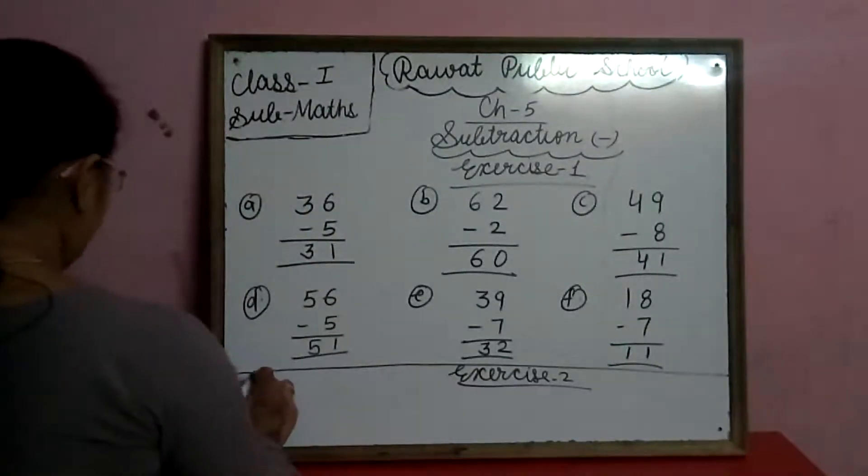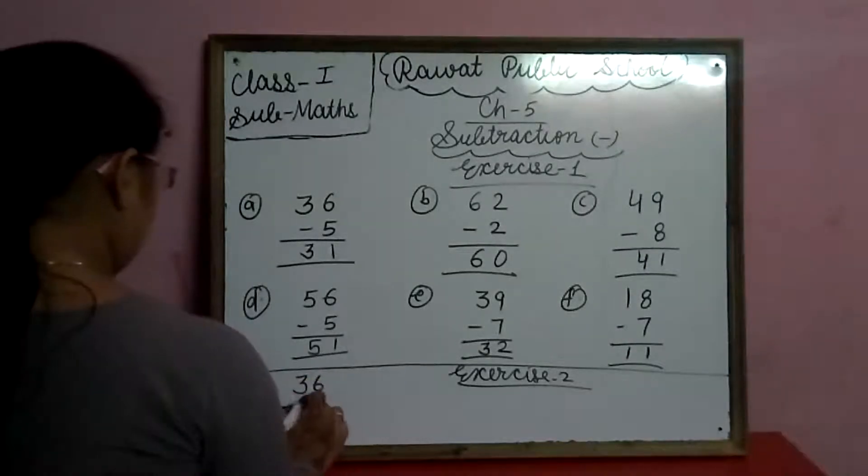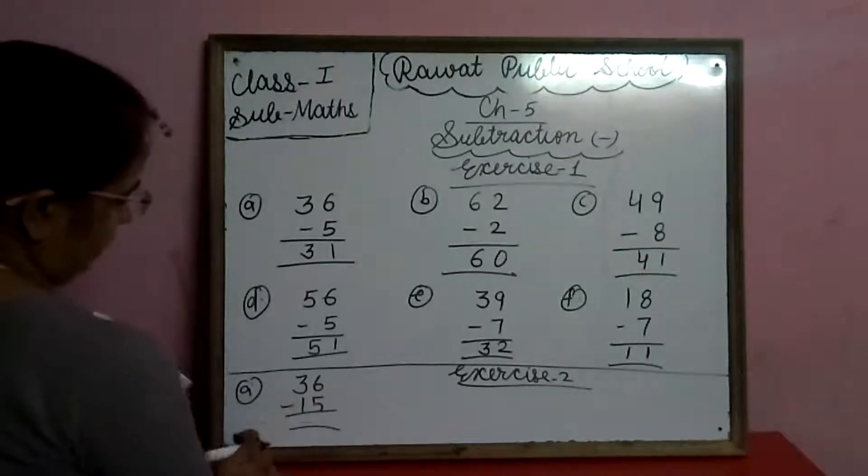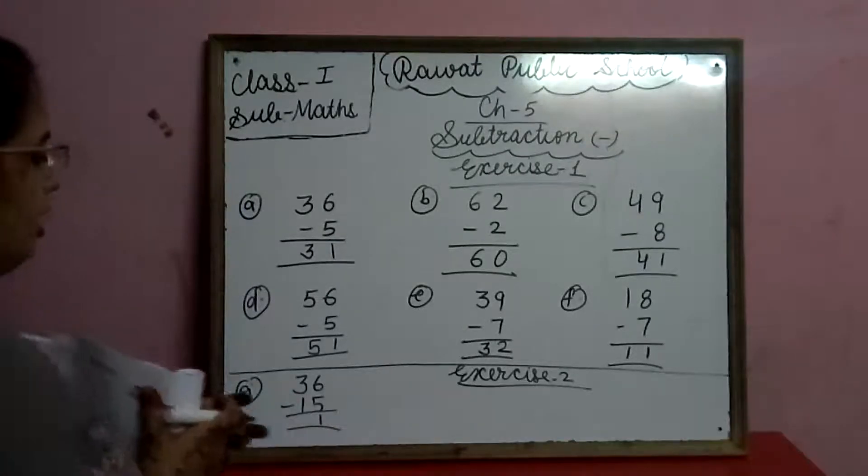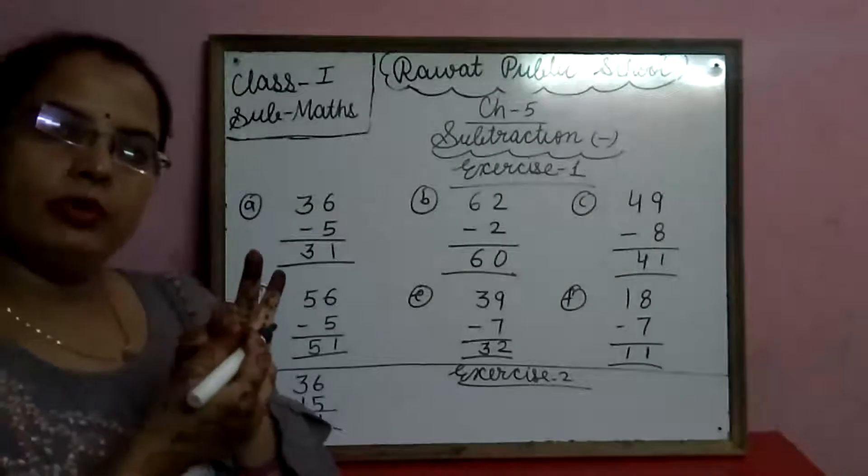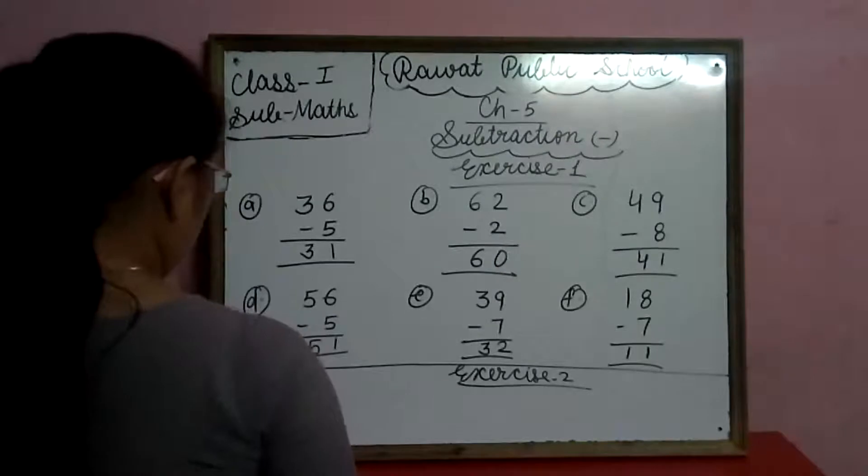A. 36 minus 15. 36 mei se 15 cut karengo. 6 mei se 5 jayega toh 1. 3 mei se 1 jayega toh, 3 fingers. 3 mei se 1 finger cut karengi. How many fingers are left? 2 fingers. So we will write here 2.